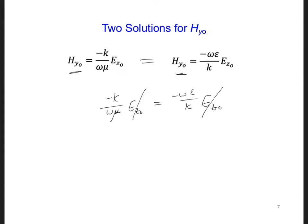So we can cancel the EZ0s. They are on both sides. We can also cancel the minus signs. And then we have K over omega mu is omega epsilon over K. So now let's combine common terms. We're going to put both of the omegas on the right side and both wave numbers on the left side. So then we'll have omega squared and K squared. And then let's put the material parameters mu and epsilon together on the left side. So we have 1 over mu epsilon.